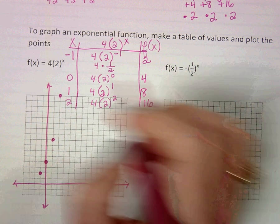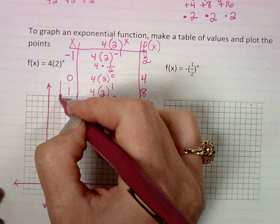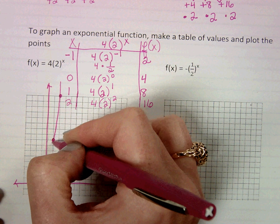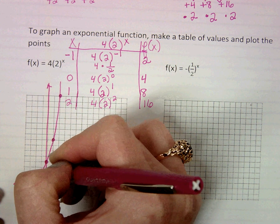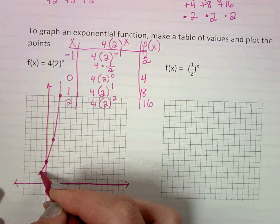Now, it kind of looks a little bit linear, but what you're going to see when we connect this, and if we were to maybe plot a few more negative numbers, you're seeing that it starts to curve,